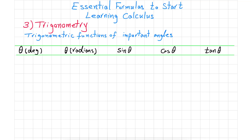I'm going to complete this table with those angles so we can remember them for future use. The first angle is zero degrees, which is equivalent to zero radians. Sine of zero is zero, cosine of zero is one, and tangent of zero is zero. Note that tangent of theta equals one over cotangent of theta, so cotangent values are not included in this table.